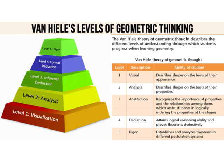First, let's explore what the Van Hiele model is. The Van Hiele model has five levels. The first level is called visualization, where students are able to describe shapes based on their appearance. The second stage is analysis, where students are able to describe shapes based on their properties.